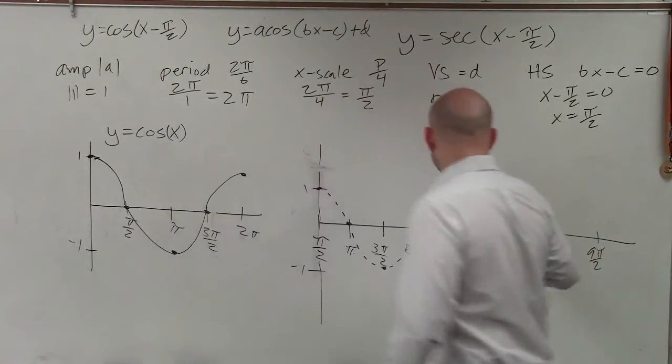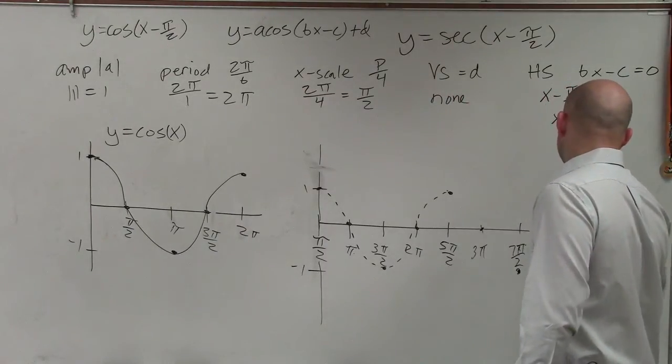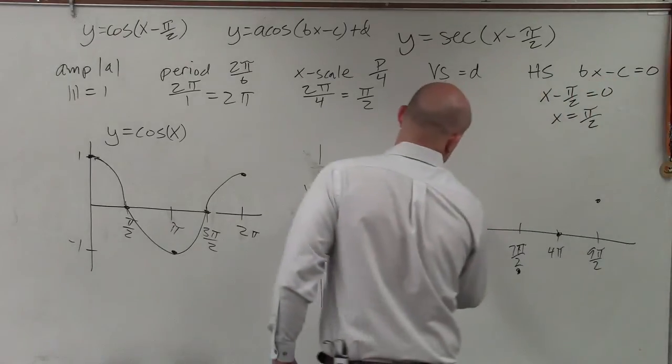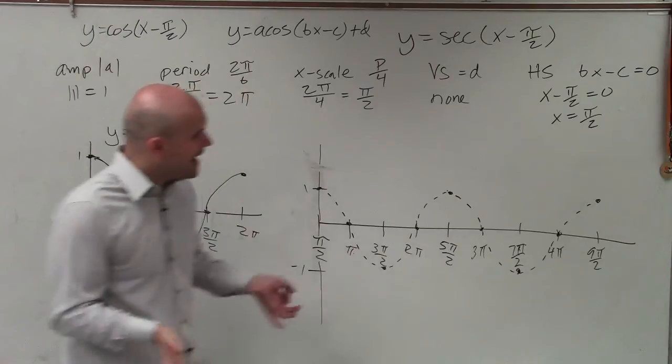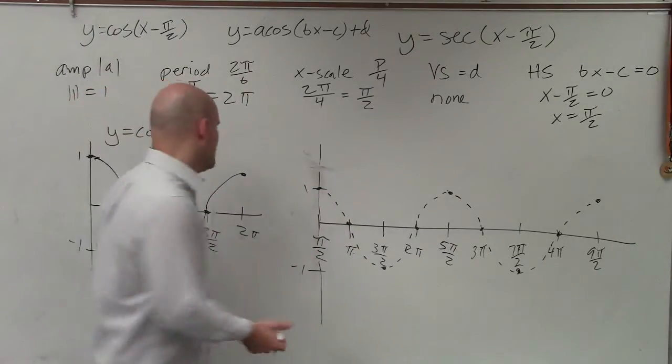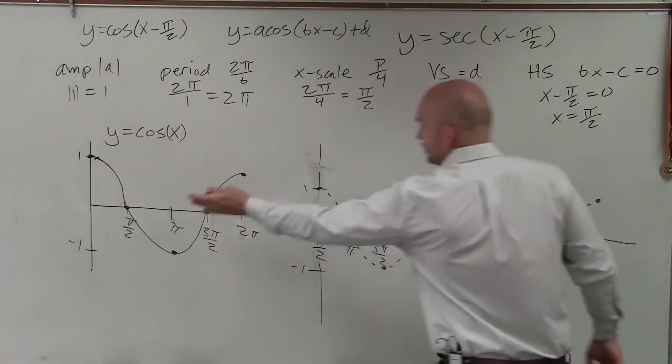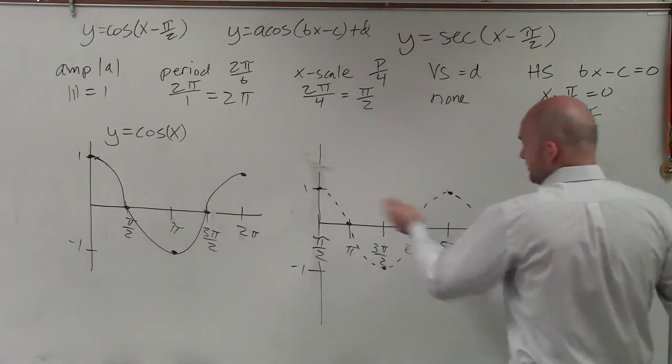Then, I'm just going to follow that pattern one more time. OK. So now, I have graphed what cosine looks like, right? Got to know what cosine. But now, rather than it starting at 0, like the initial period, it starts at pi halves.